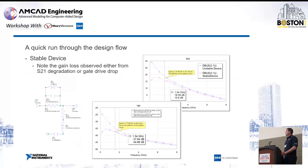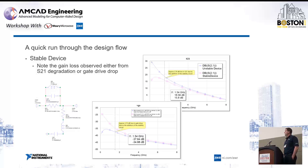We put in a stability network at the gate, and that brings down the low-band gain significantly, getting into a region where we're stable — at least looking at the small-signal stability parameters. The trade-off is some gain loss, observed from either S21 degradation or gate drive drop, showing a gain drop of a couple of dB — a little more than 2 dB — in our band of interest.